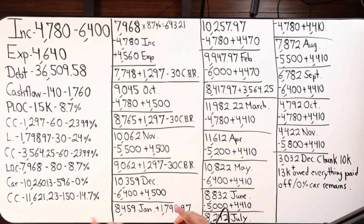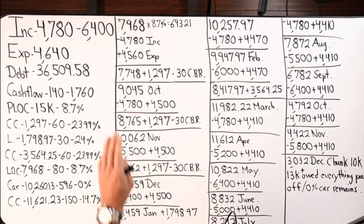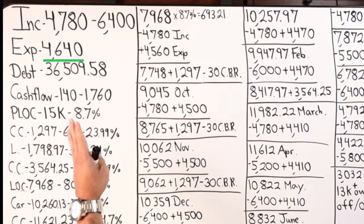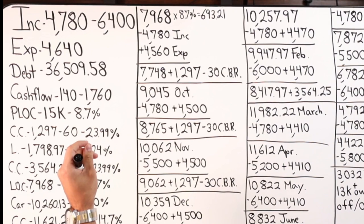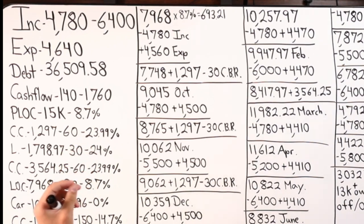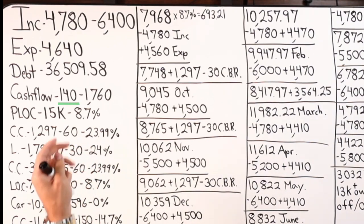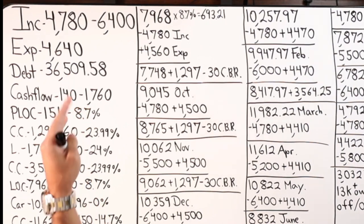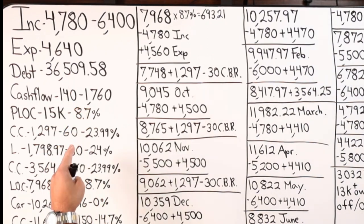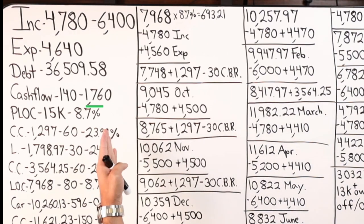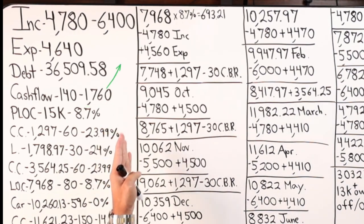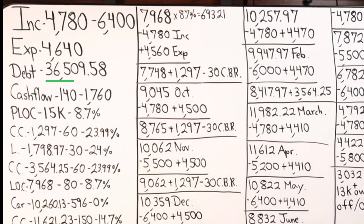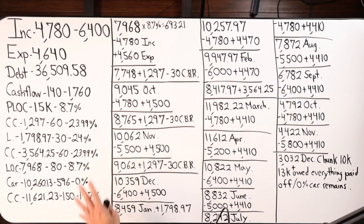Our timeline is within five to seven years — not just getting out of debt, but creating financial freedom and independence. Income is $4,640 in expenses, leaving a cash flow of only $140. If they bring in $6,400 for the month, cash flow can be as high as $1,760. Total debt is $36,509.58.